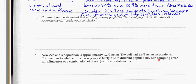So question D. They're asking us to make a comparison — comment on the statement that virtually as many people, 10.8%, would prefer to live in Europe as in Australia, 11%.